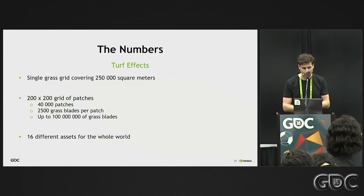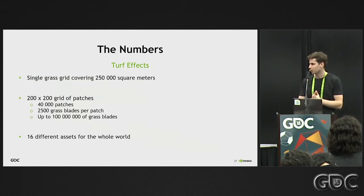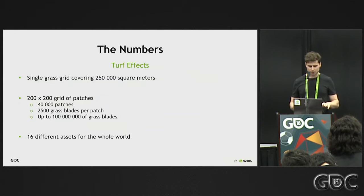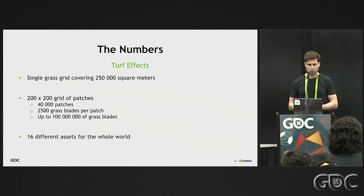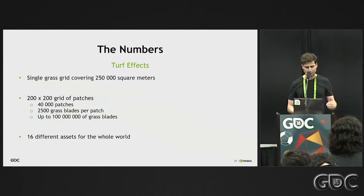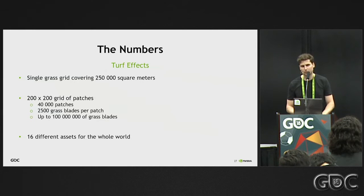Let's talk about the numbers. The final implementation uses a single grid covering 250,000 square meters. This grid moves with the camera, so it's not allocated for the whole world. The grid consists of 40,000 individual square patches, and each patch holds approximately 2,500 grass blades, allowing up to 100 million grass blades in view. You don't render all of them at once — the library allows smooth LOD falloff for reasonable performance. For the whole game, we created 16 different assets used throughout.